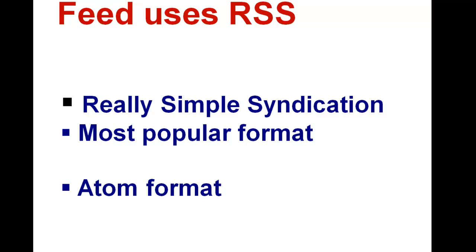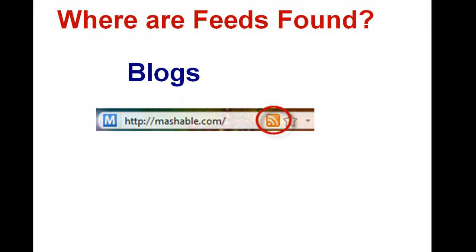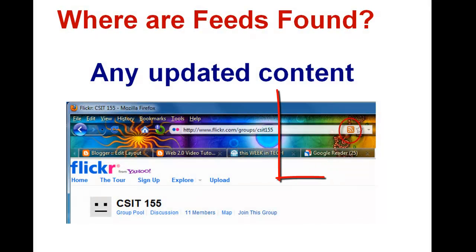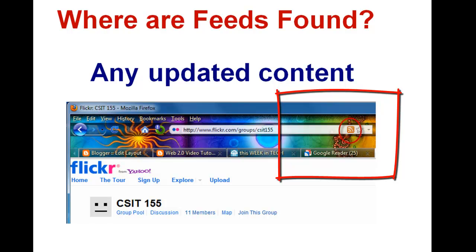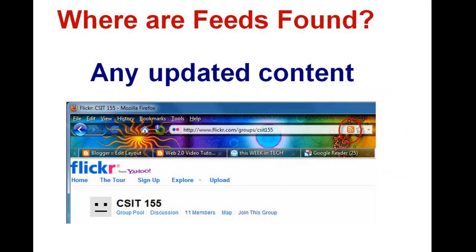The most common feed format is called RSS which stands for Really Simple Syndication. The Atom format is also used and is also becoming more popular. Where can we find a feed? Well, we have already looked at blogs as having a web feed. But actually, any type of updated content can generate a feed. For example, a Flickr photo stream can be subscribed to using an RSS feed.